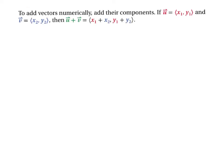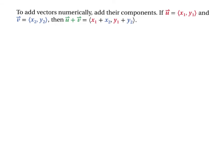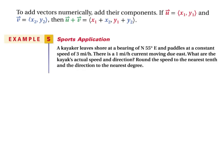To add vectors numerically, simply add the two x-values together and add the two y-values together. Let's do example 5: a kayaker leaves shore at a bearing of N55°E and paddles at 3 miles per hour, with a 1 mph current moving due east. We need to find the kayak's actual speed and direction, rounding speed to the nearest tenth and direction to the nearest degree.